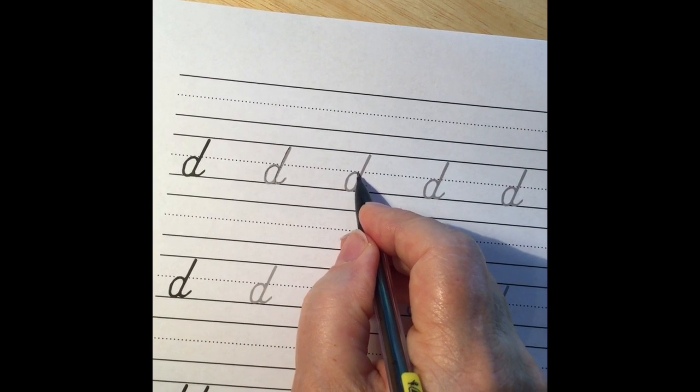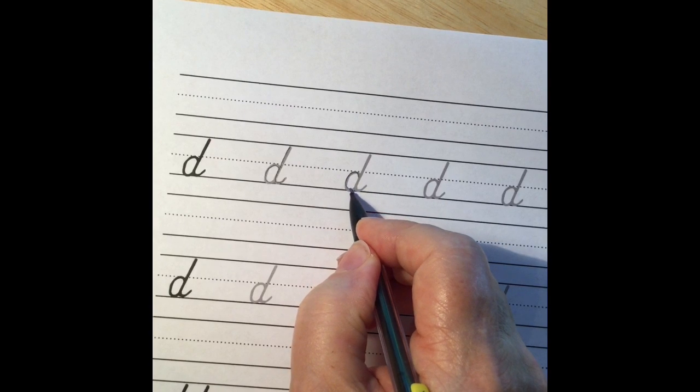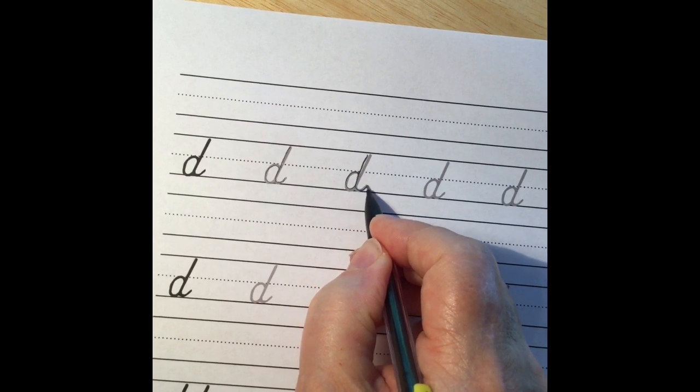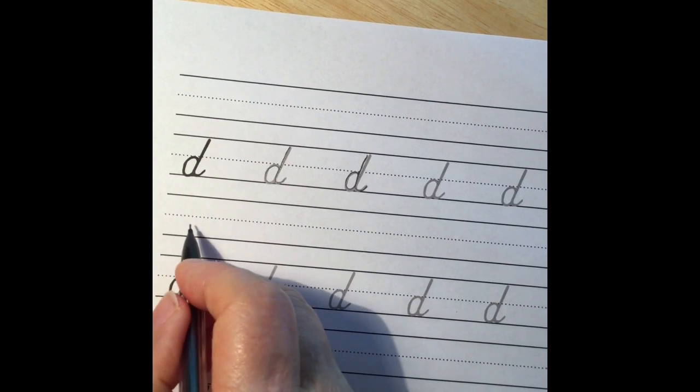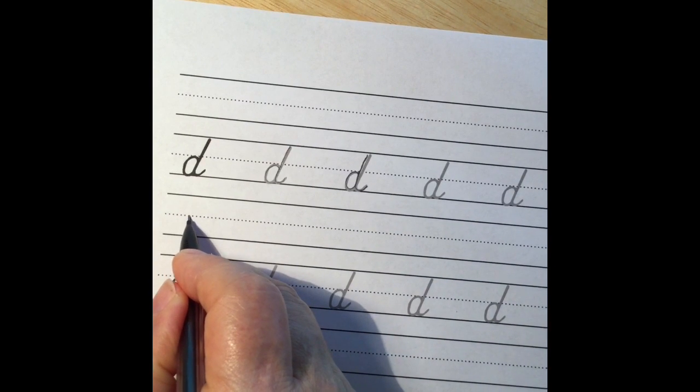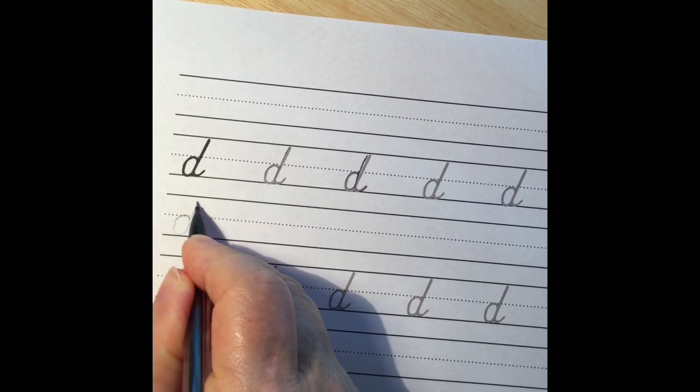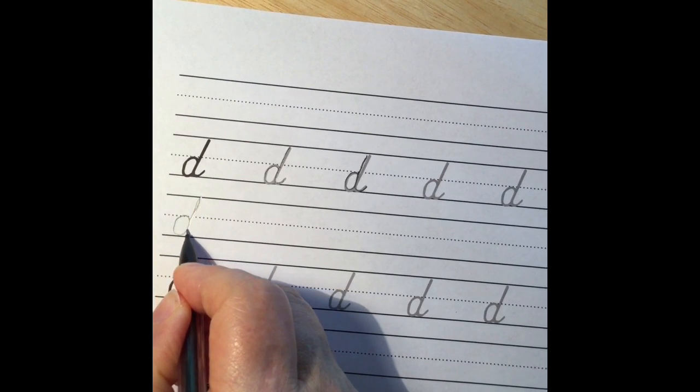After we've practiced on the training wheel letters and our hand feels confident, we can move to the line underneath and try them on our own. So we do just below the midline a down curve, up and down.